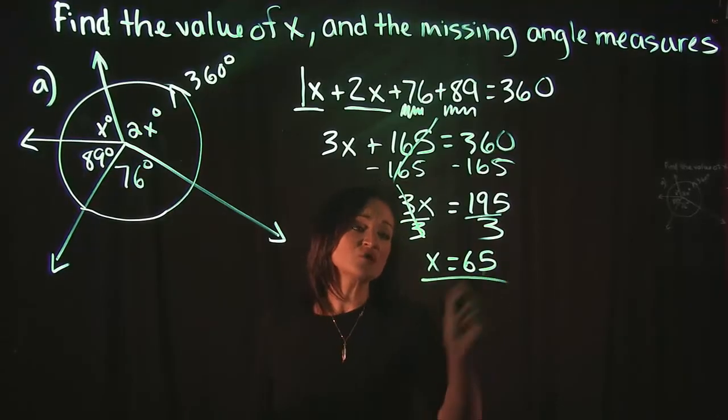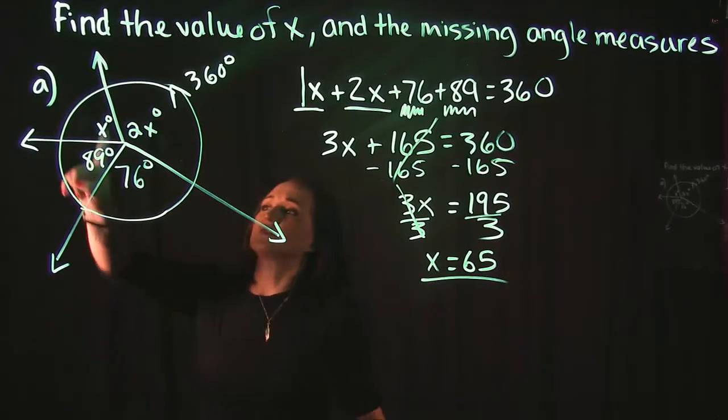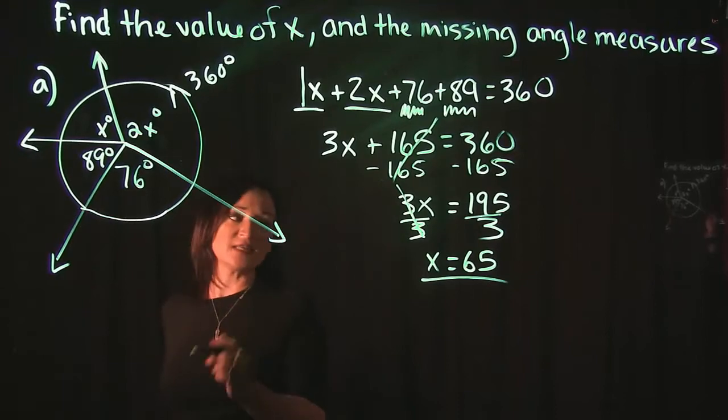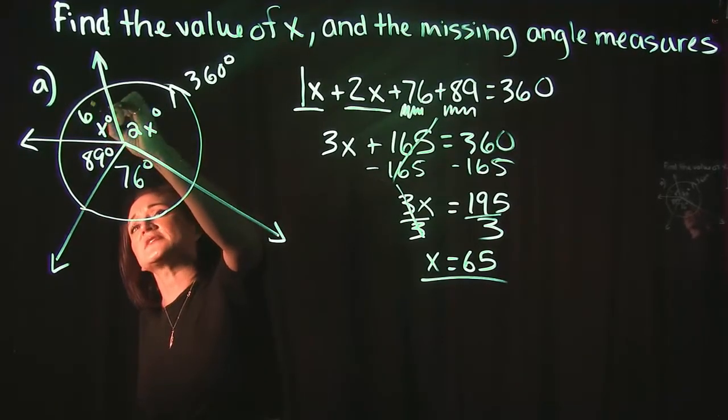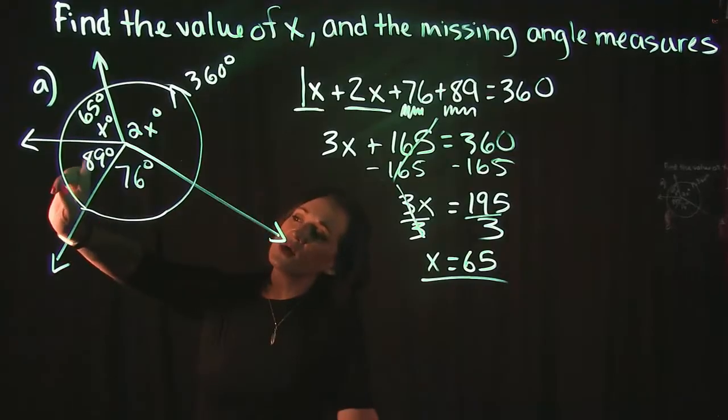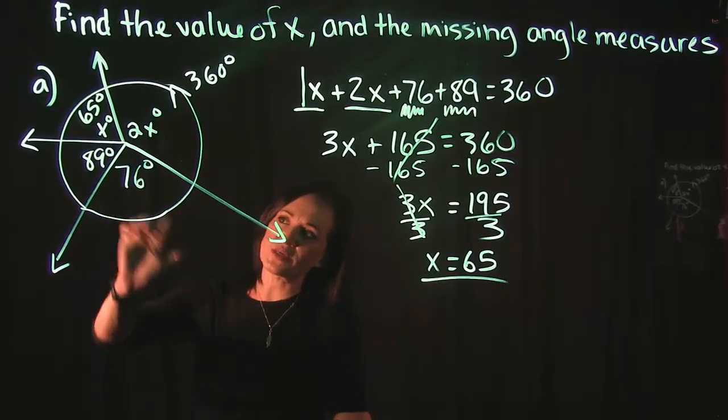So we found what x is equal to. Now, this first angle over here is equal to x, so that means this angle here is 65. We already know that this one is 89. We know that this one is 76.